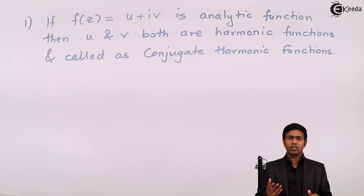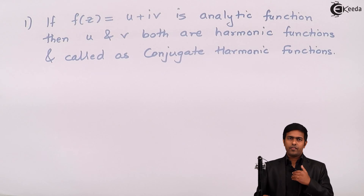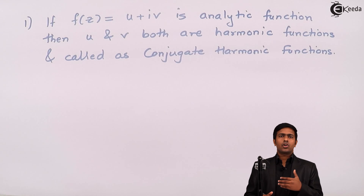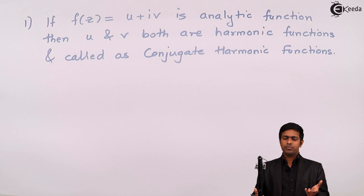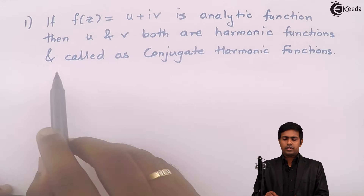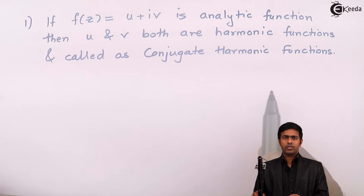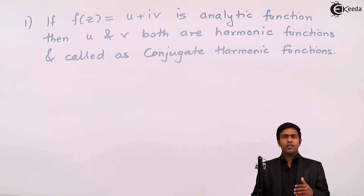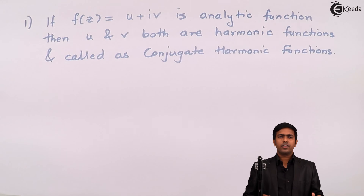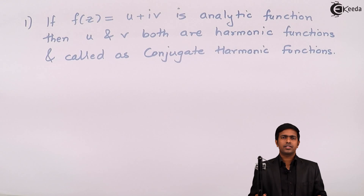It means u is the conjugate harmonic of v, and v is the conjugate harmonic of u. We are going to use this property while solving a few numericals.